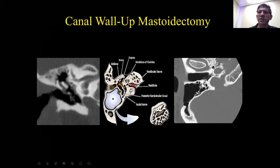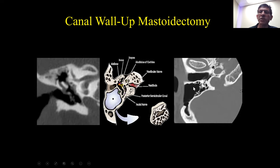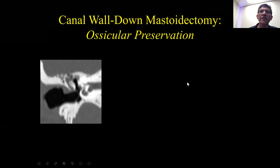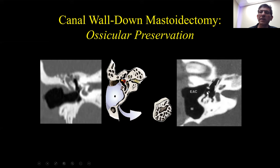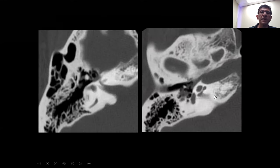Unlike the prior image where the posterior external auditory canal was maintained, in this case the canal wall has been taken down, but they have preserved — or made every attempt to preserve — the ossicles. We can see preservation of the malleus, the incus, and the stapes.